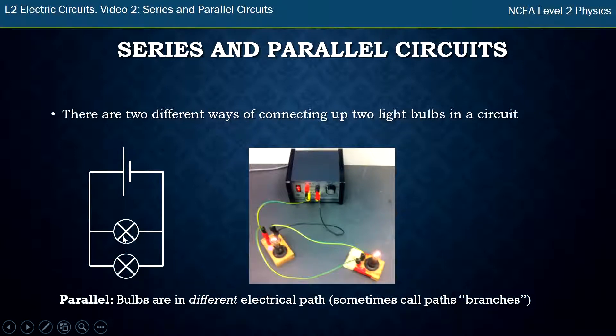These two bulbs here you can see electricity can flow out of the battery and it can choose to go in one path or it can choose to go in another path and then it joins up again. I sometimes call the paths branches and so you'll hear me switch back and forth between the language of paths or branches but it still means the same thing as part of a parallel circuit.